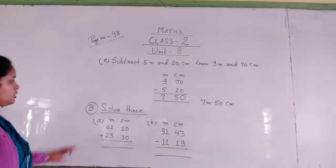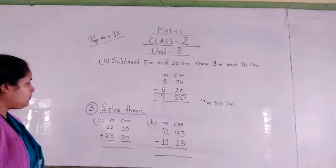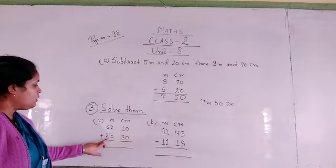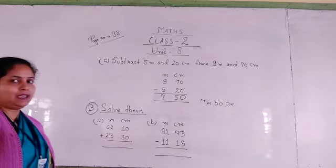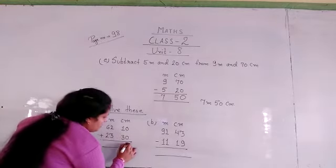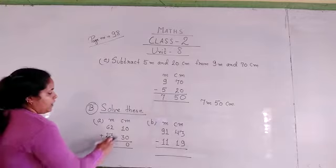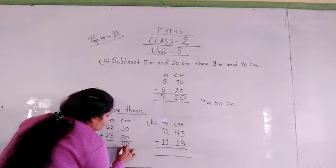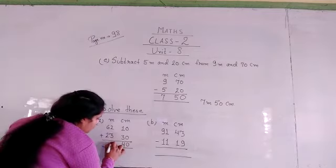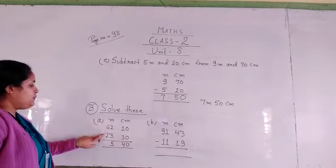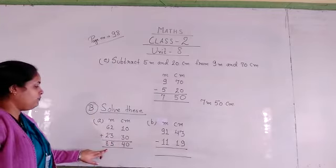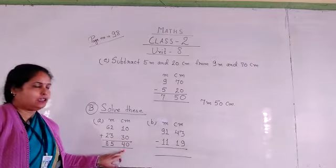Next question, question number B. Solve this. Question number A: 62 meter 10 centimeter plus 23 meter 30 centimeter. We start addition: 0 plus 0 is equal to 0, and 1 plus 3 is equal to 4. Then 2 plus 3 is equal to 5, and 6 plus 2 is equal to 8. Our answer is 85 meter 40 centimeter.